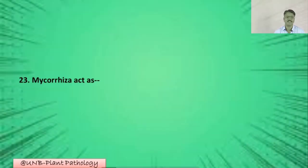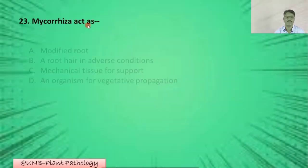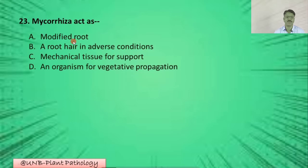Question number twenty-three: The mycorrhizae acts as — A: a modified root; B: a root hair in adverse condition; C: mechanical tissue for support; D: an organism for vegetative propagation. The correct option is B: a root hair in adverse condition.